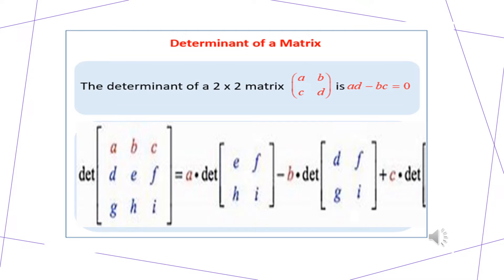Coming to the case of a third-order determinant, we have elements ABCDEFGHI. ABC forms the first row, DEF forms the second row, and GHI forms the third row. For columns: ADG is the first column, BEH is the second column, and CFI is the third column. To simplify this, we take the first row element in the first column, which is A, and multiply it by the remaining elements.